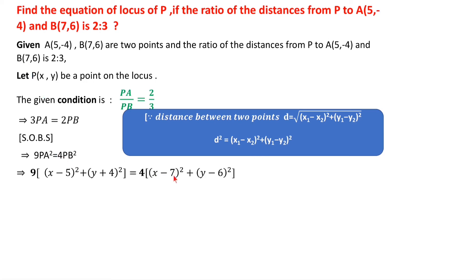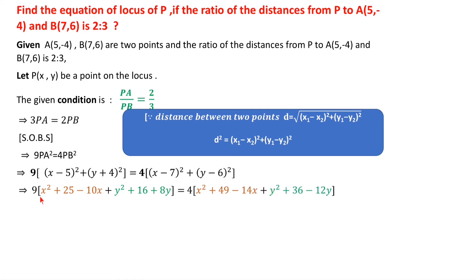Expanding: 9[(x - 5)² + (y + 4)²] = 4[(x - 7)² + (y - 6)²]. Expanding (x - 5)² = x² + 25 - 10x, (y + 4)² = y² + 16 + 8y, (x - 7)² = x² + 49 - 14x, (y - 6)² = y² + 36 - 12y. Multiplying left side by 9: 9x² - 90x + 225 + 9y² + 144 + 72y.